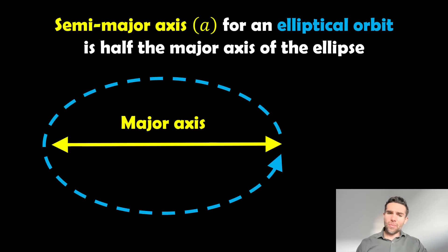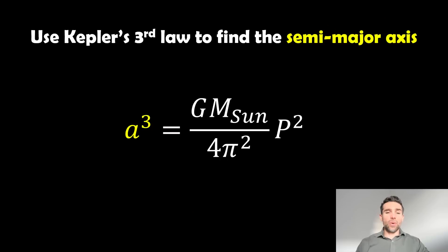This is our major axis here, so we just want to take half of that. The minor axis is in the other direction, essentially. That's the shortest distance on the ellipse.